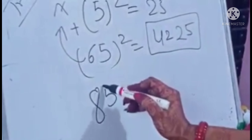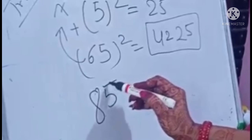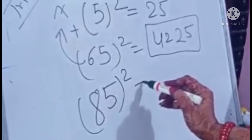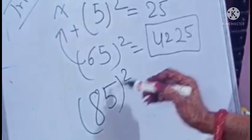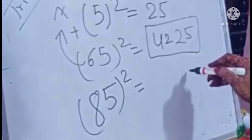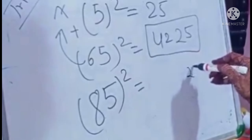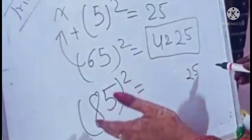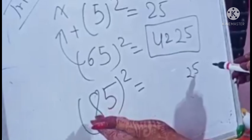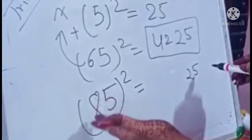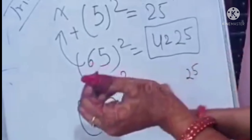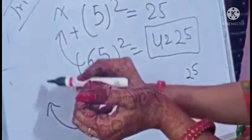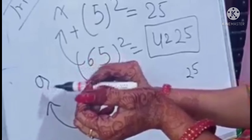But when we do it the traditional way with 103 and 106, first we have to multiply 6 by 3, then 6 by 0 — I think it will take 4 to 5 minutes. So guys, with this trick you can easily give the answer in 4 to 5 seconds.